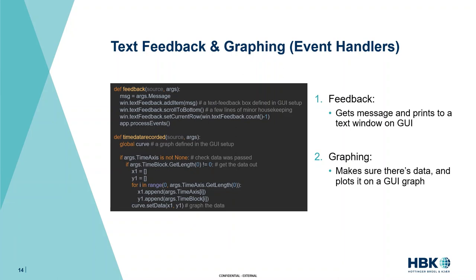Event handlers may sound a little scary but they're not too bad. These functions unpack the data passed to them in the args variable by the EA Engine. For text feedback we get the text message out of args and print it to the text box on the GUI. For graphical feedback we check that there is data to graph, unpack it into variables x1 and y1, and set that data on the graph on the front panel. All in all it's pretty simple.